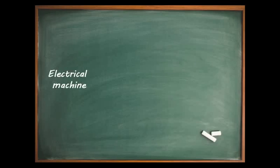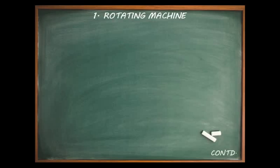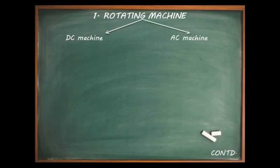Electrical machines are basically divided into two parts: rotating machines and static machines. Rotating machines have rotating parts in their structure, while static machines have no rotating parts. Rotating machines are further divided into DC machines and AC machines. DC machines run on direct current and AC machines run on alternating current.